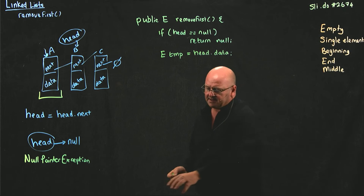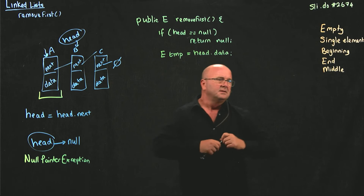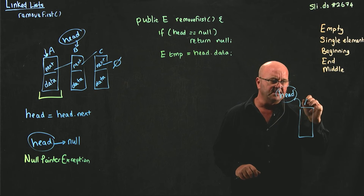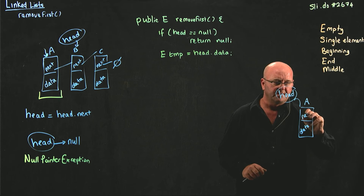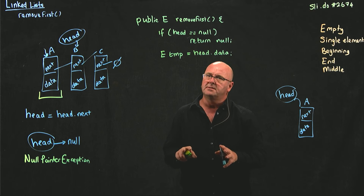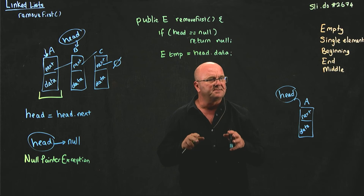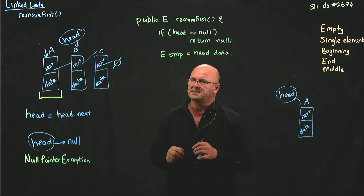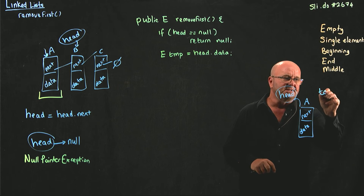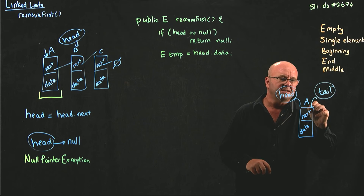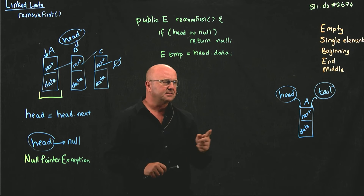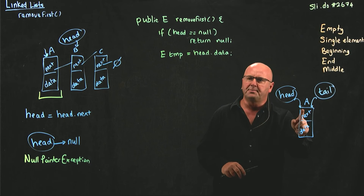Let's think about a single element list. We have a head pointer and a single element, A. Remember when we're adding, it really helps if we have a tail pointer — when we're doing an add last, a tail pointer is very helpful. So if we add a tail pointer, our tail pointer also points to the same element. If we have one element in the list, our head and our tail both point to the same element.